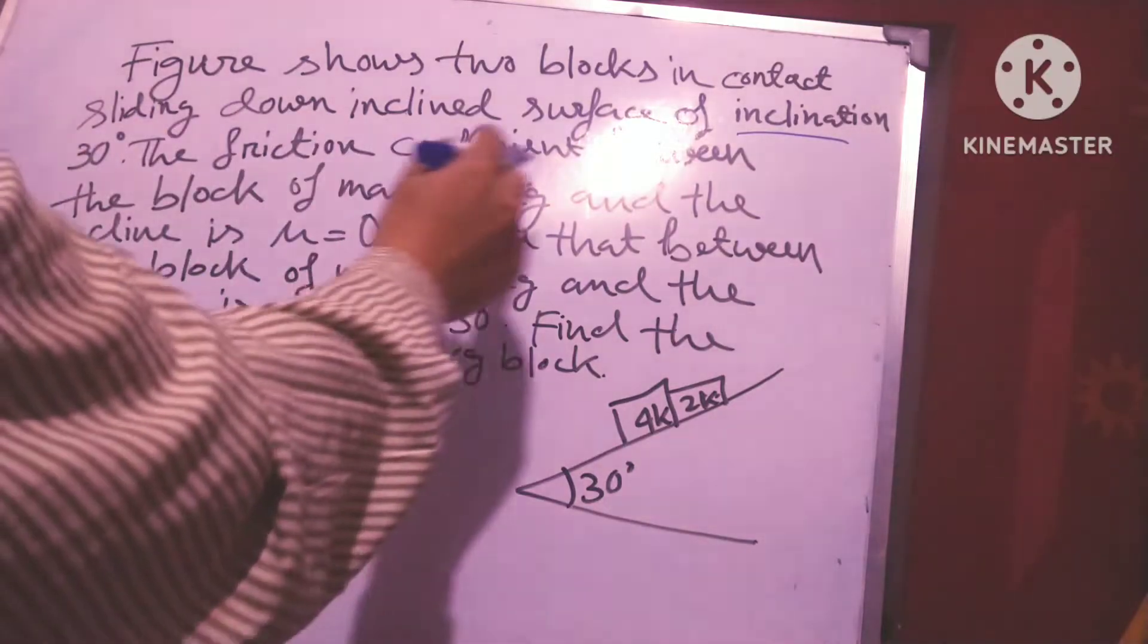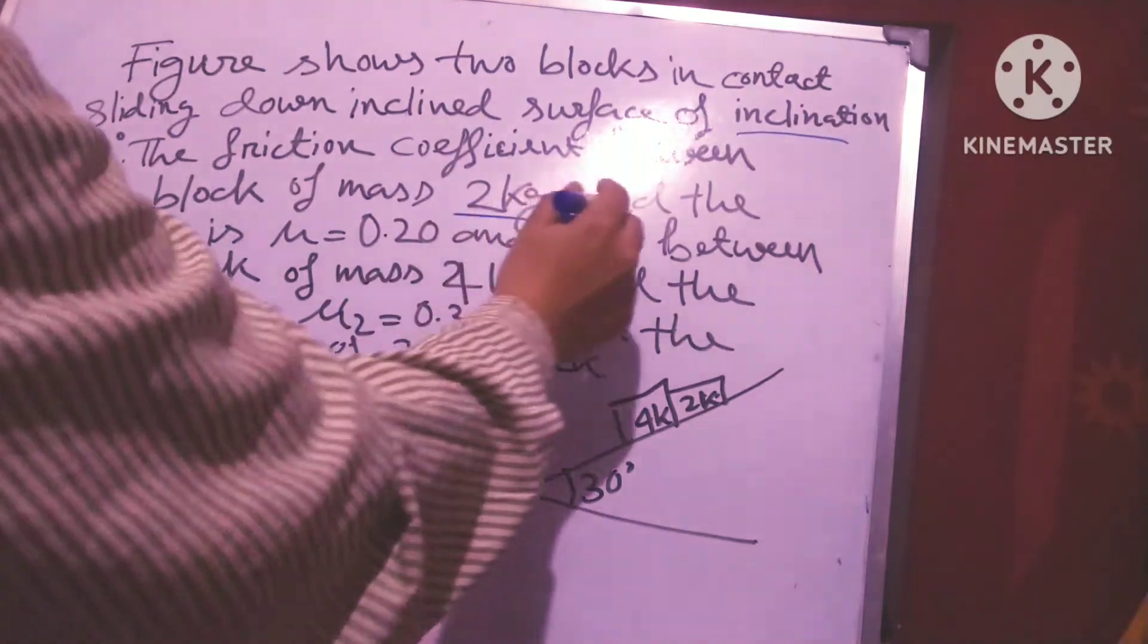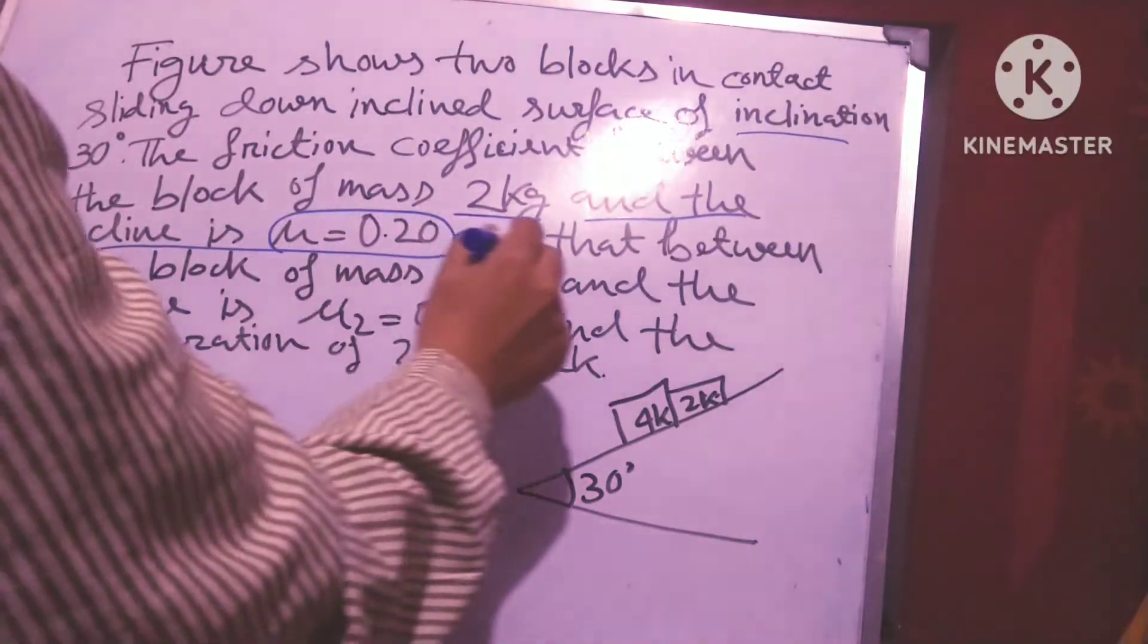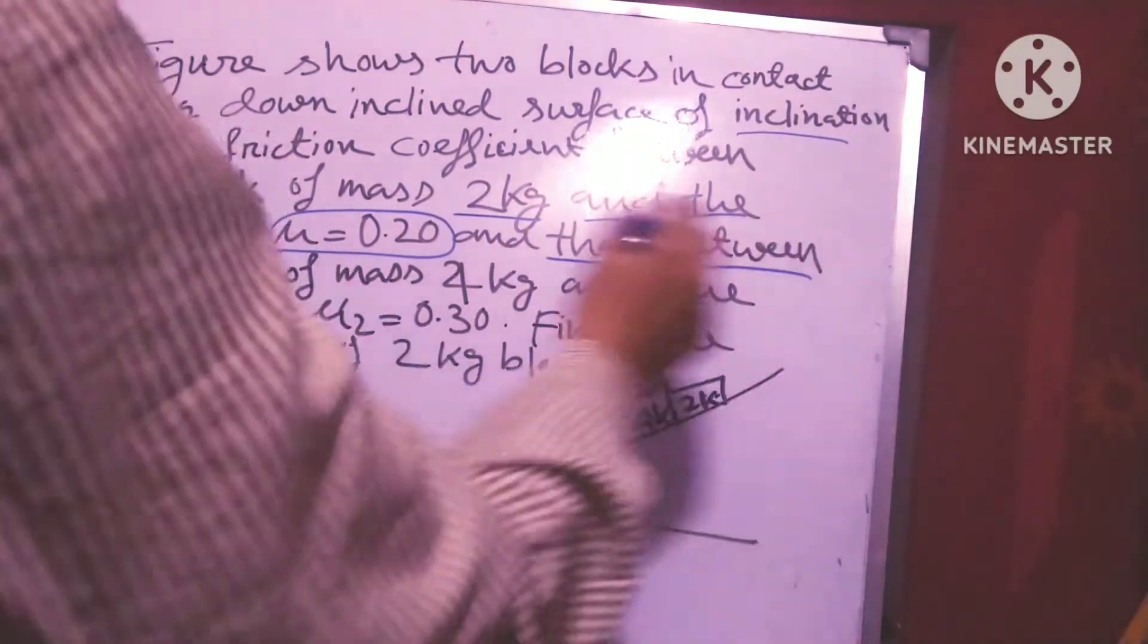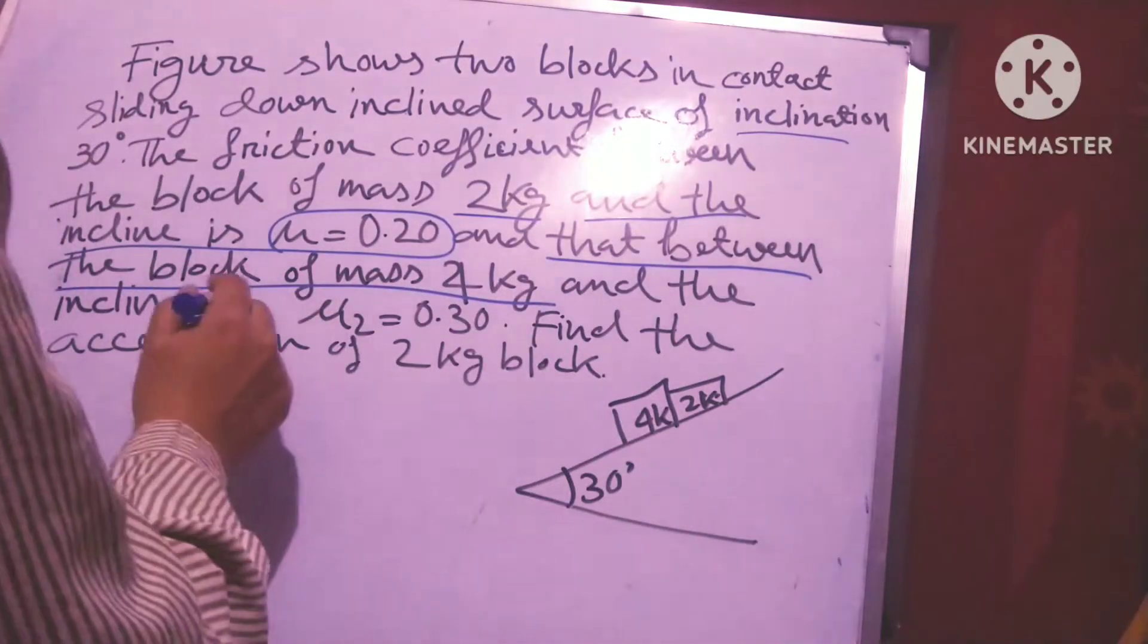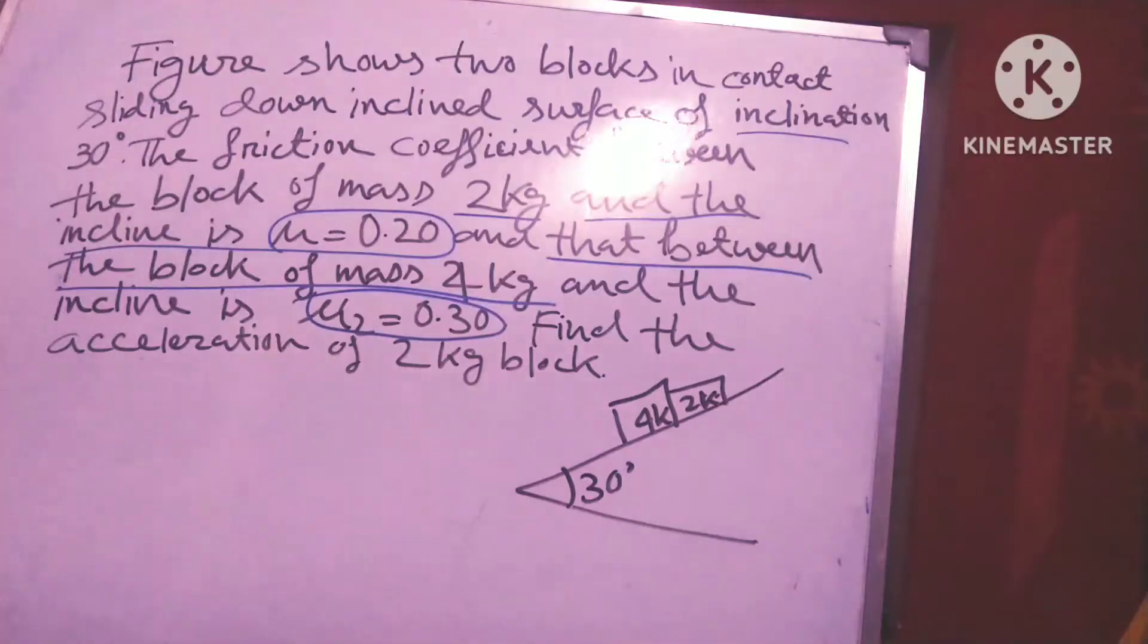The friction coefficient between the block of mass 2 kg and the incline is μ₁ = 0.20, and that between the block of mass 4 kg and the incline is μ₂ = 0.30. Find the acceleration of the 2 kg block.